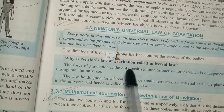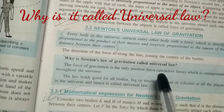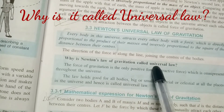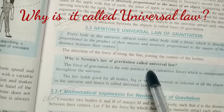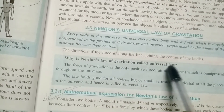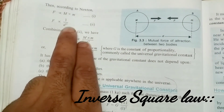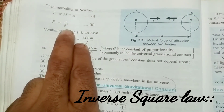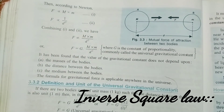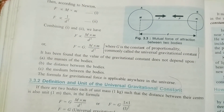Newton's law of gravitation is also called the universal law because it is applicable everywhere in the universe. Also, since force is proportional to 1 by d square, it is inversely proportional to the square of the distance, and so it is sometimes known as the inverse square law.